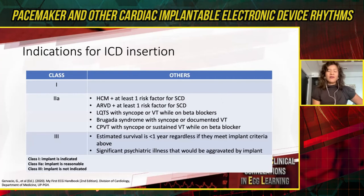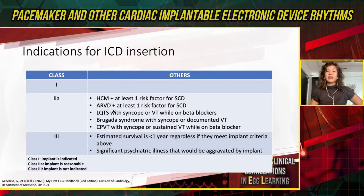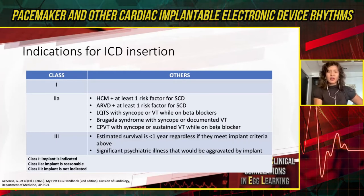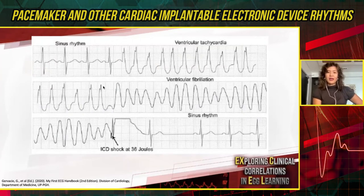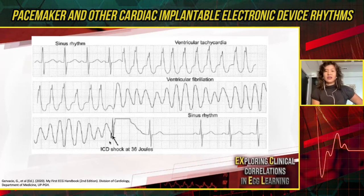Special population indications include those with hypertrophic cardiomyopathy, arrhythmogenic RV dysplasia or RV cardiomyopathy, and channelopathies such as long QT syndrome, Brugada syndrome, and CPVT. If they have risk factors — actual VT or syncope in CPVT, or failed beta blockers — those are class 2A indications for an ICD. A sample ICD tracing shows sinus rhythm, followed by ventricular tachycardia that degenerates into VF, which is detected by the ICD and terminated with a 36-joule shock equivalent to 800 volts, restoring sinus rhythm.